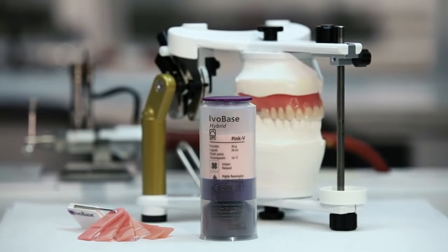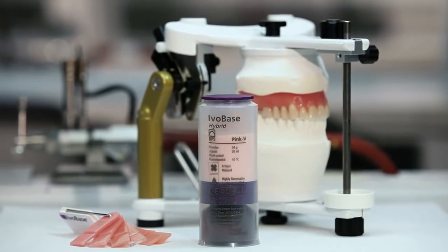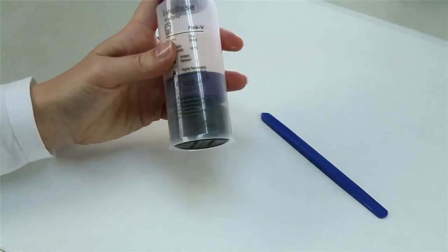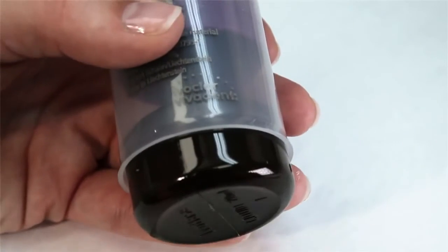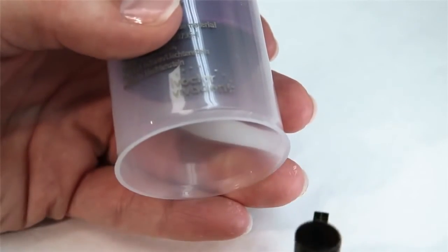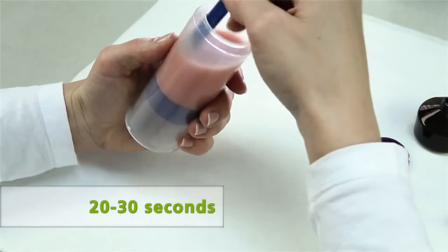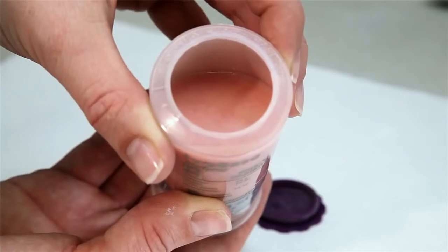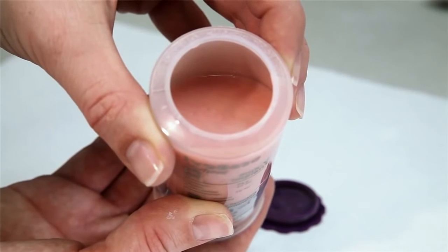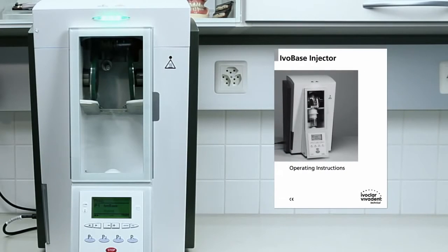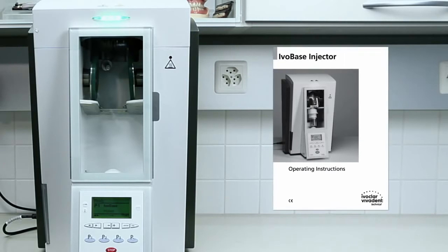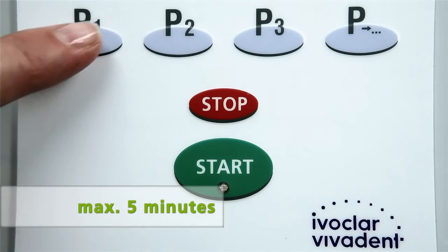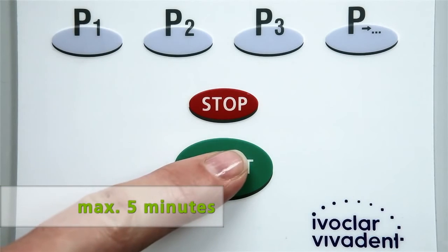One capsule is sufficient for the injection of a maxillary or mandibular complete denture. A short blast of compressed air between the monomer container and the capsule renders the monomer container easy to remove from the capsule. Use the spatula to mix the monomer and polymer to a homogenous mixture for approximately 20 to 30 seconds. Make sure that the material is thoroughly mixed. The operation of the IvoBase injector is described in detail in the corresponding operating instructions. No more than 5 minutes should pass between mixing the material and the start of the polymerization program.